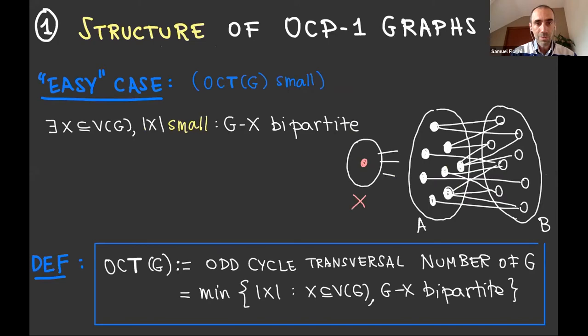Alright, so OCP one graphs can be easy. So first, the easy case is when you have a small set of vertices whose removal makes a graph bipartite. So for instance, you could take any bipartite graph at one vertex to it. This is the graph with OCP at most one. But if the set X is small, then for solving the maximum stable set problem, you don't need to do much because you can just discuss all the cases, brute force all the possibilities that the stable set can intersect your set X. And then you're left with a bunch of bipartite stable set problems, which are easy to solve. So when the odd cycle transversal number of the graph is small, then this is easy.